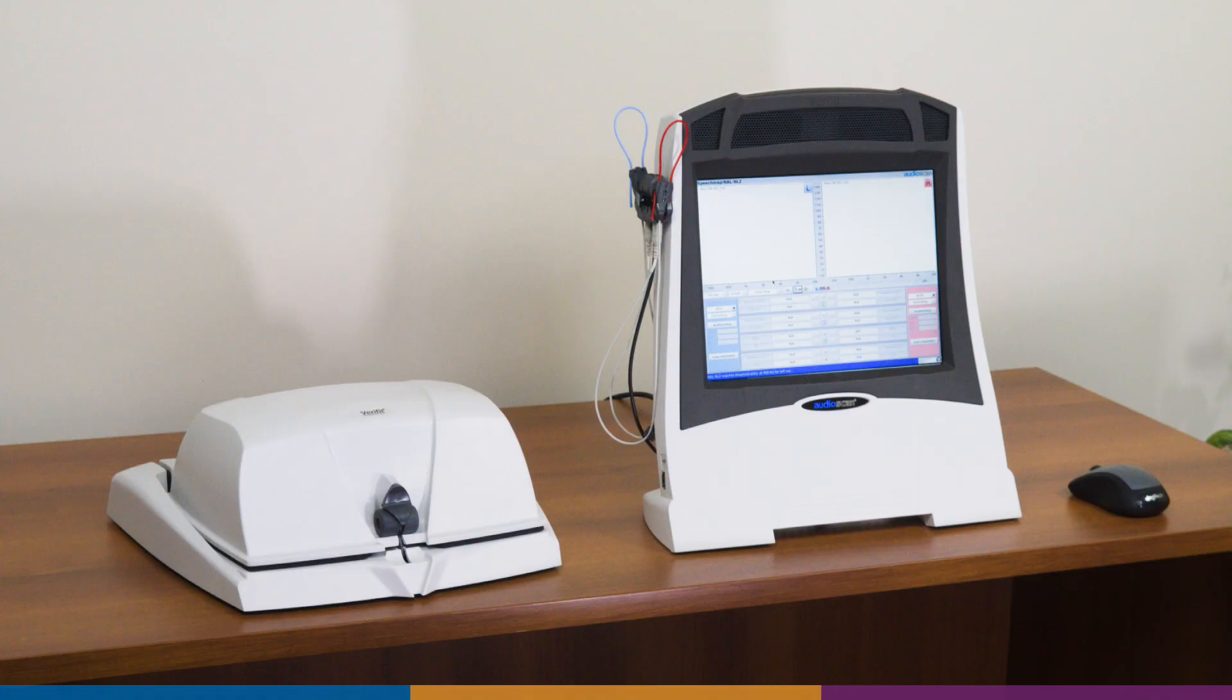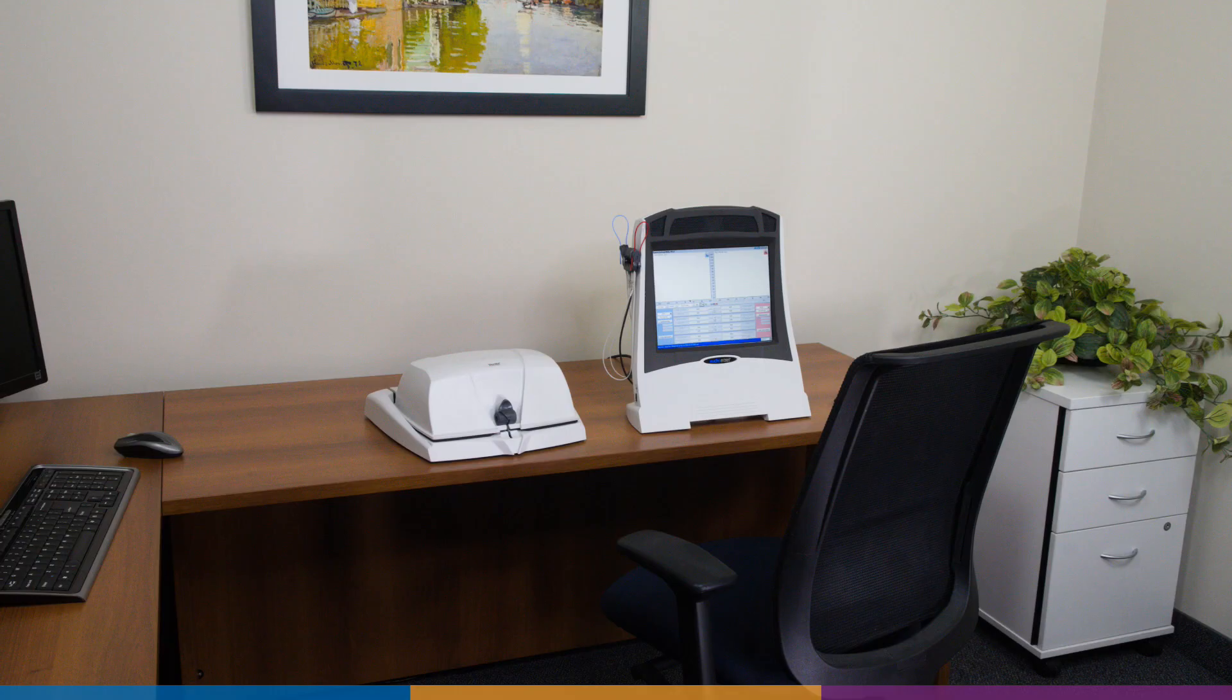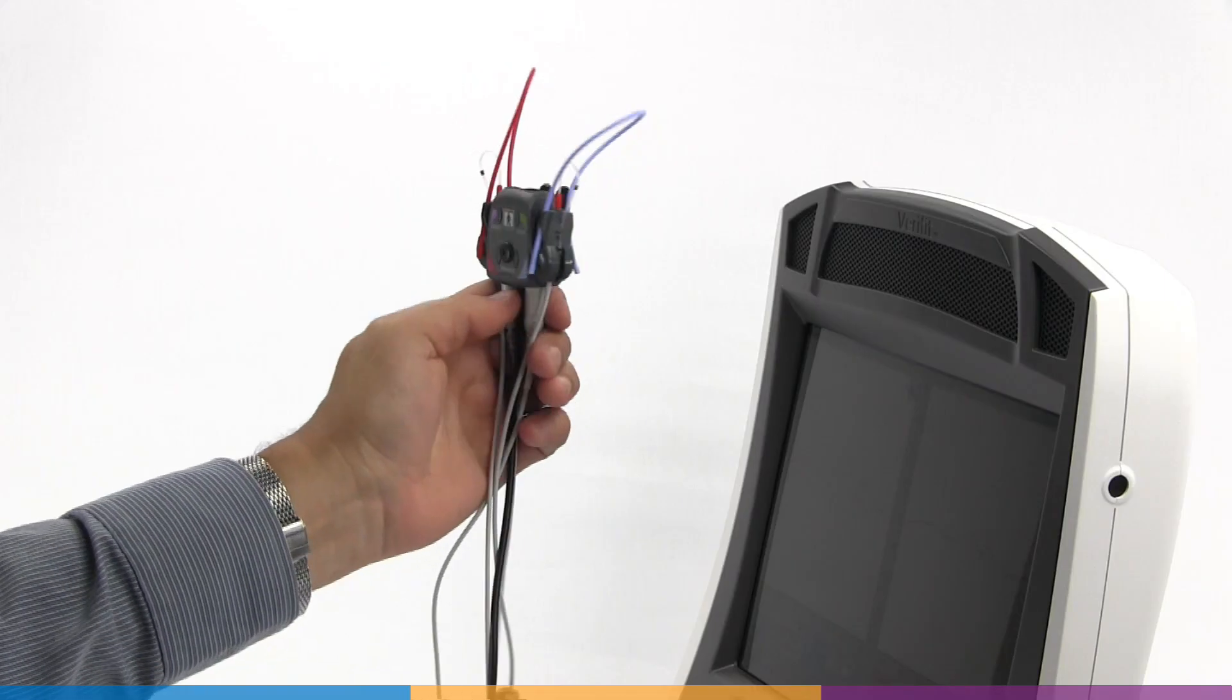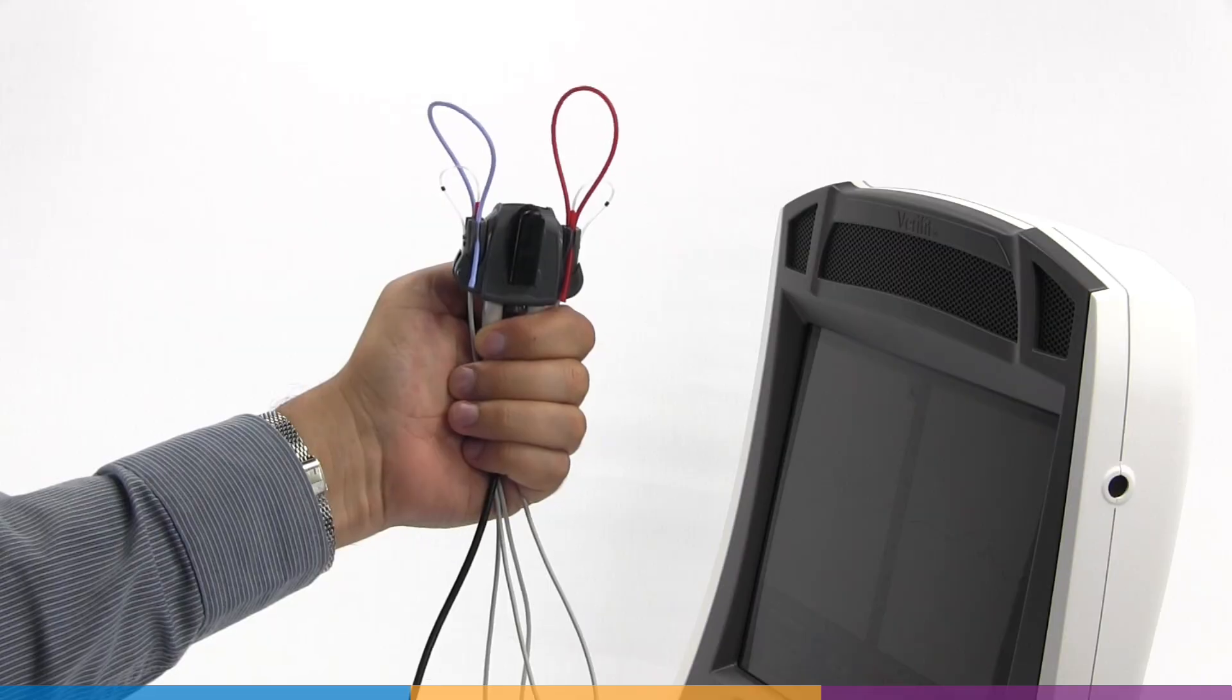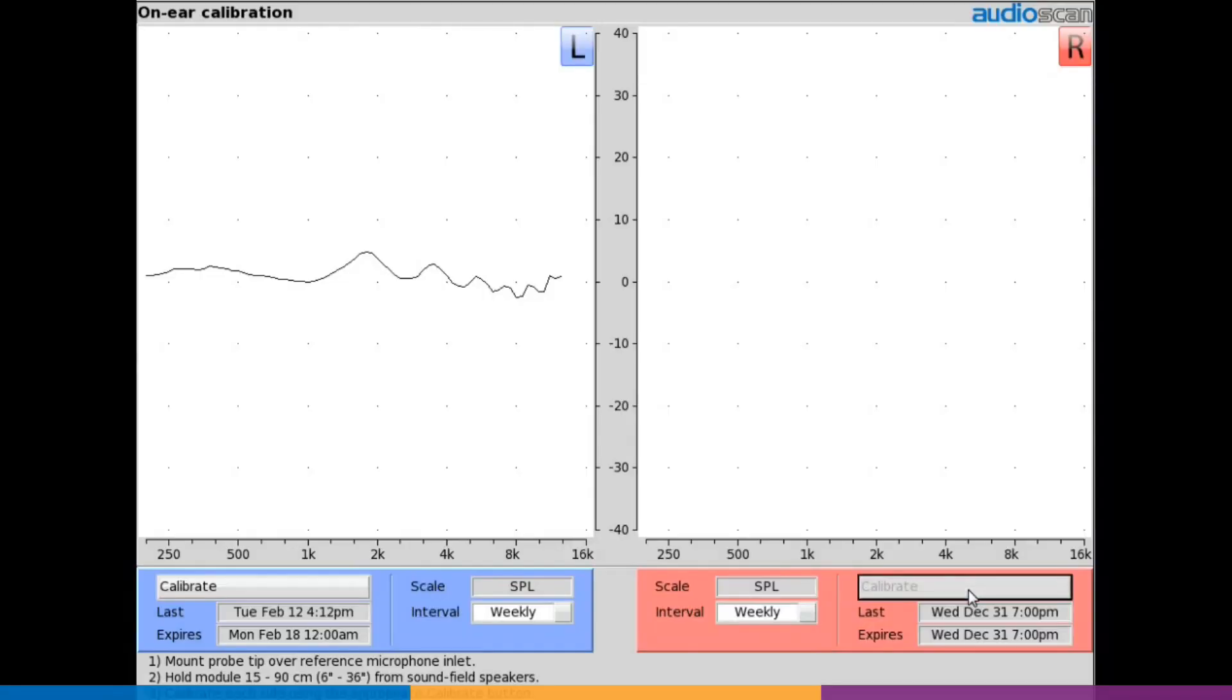Before using ProbeGuide, ensure that your equipment is ready for real ear measurements. Your Verifit2 or Axiom should be positioned away from reflective surfaces in a quiet environment and have a valid probe microphone calibration, according to recommendations in the UserGuide.